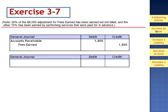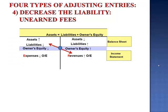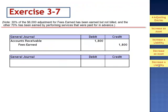The remaining $4,200 — $6,000 less the $1,800 — is due to performing services that were paid for in advance. We had already recorded a liability, and now the adjusting entry must have been a decrease to that liability because we've already done the work — debiting the balance sheet liability account and crediting the revenue account. The adjusting entry must have been a debit to unearned fees for $4,200 and a credit to fees earned. These two adjusting entries resulted in an increase to fees earned of $6,000.